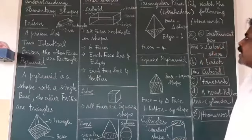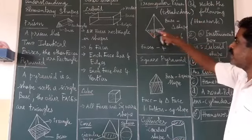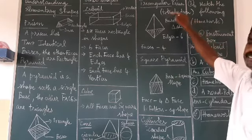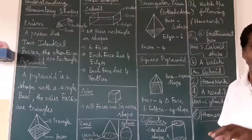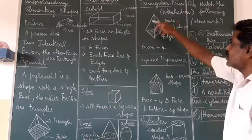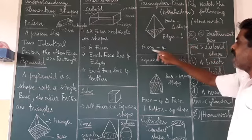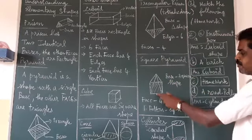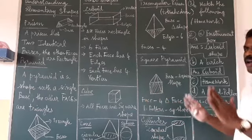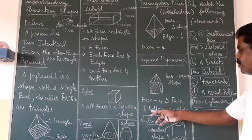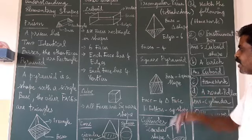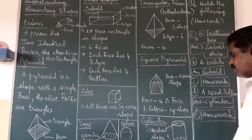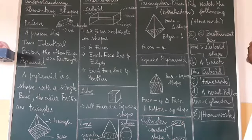A triangular prism has a triangular base and triangular faces, and is also called a tetrahedron. It has six edges and four triangular faces — three on the sides and one on the bottom. A square pyramid has a square base with four triangular faces on the sides. A cylinder has a rod-like shape with circular bases on both the top and bottom.